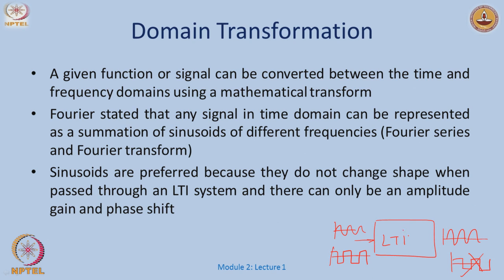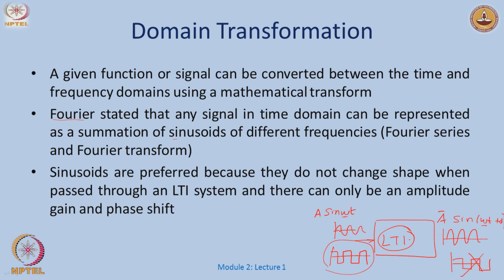On the other hand, if you send a square wave, the output will not be a square wave. Sinusoids do not change shape when passed through an LTI system — there can only be an amplitude gain and a phase shift. If this is A·sin(ωt), the output could be Ā·sin(ωt + φ); the frequency remains the same.